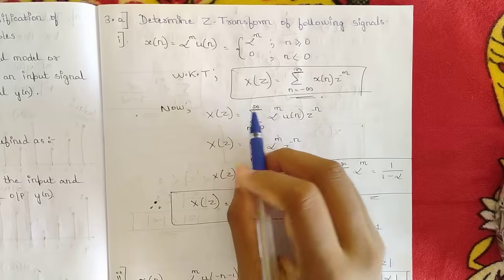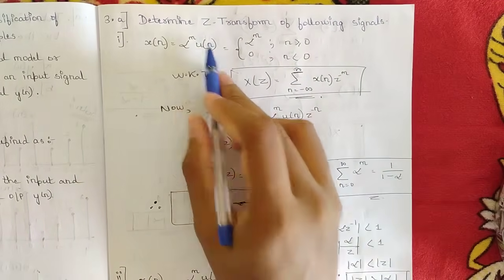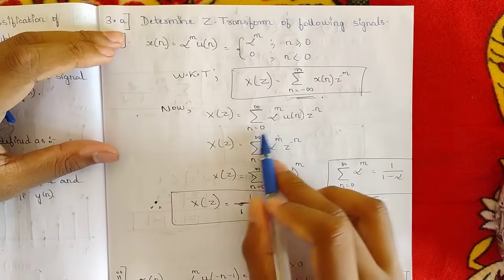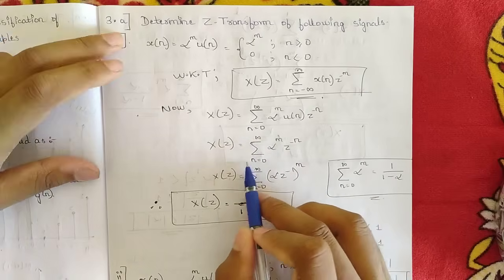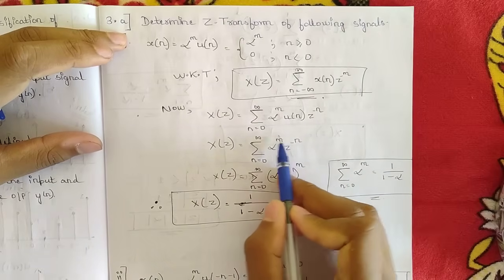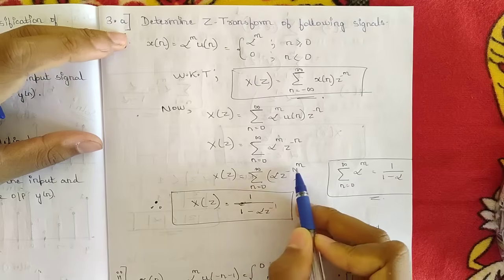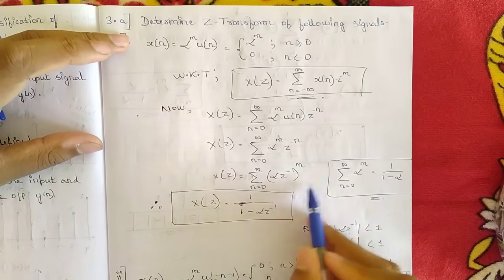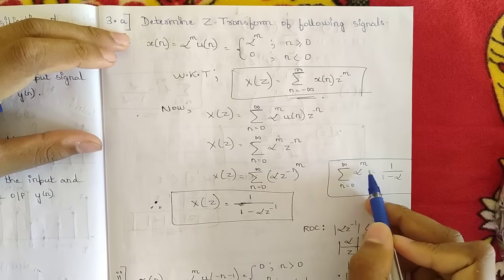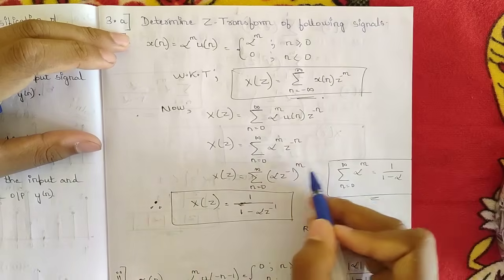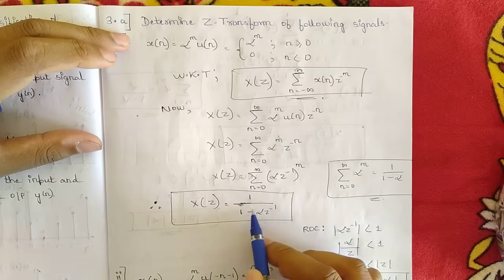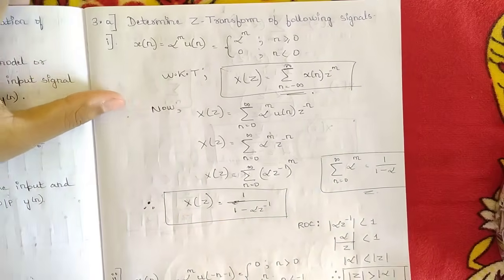Substituting x[n] = α^n · u[n], and since u[n] = 1, we get X(z) = summation from n=0 to ∞ of α^n · z^(−n). Taking n as common, this becomes (α·z^(−1))^n. Using the geometric series formula — summation of α^n from 0 to ∞ equals 1/(1−α) — we get X(z) = 1 / (1 − α·z^(−1)).